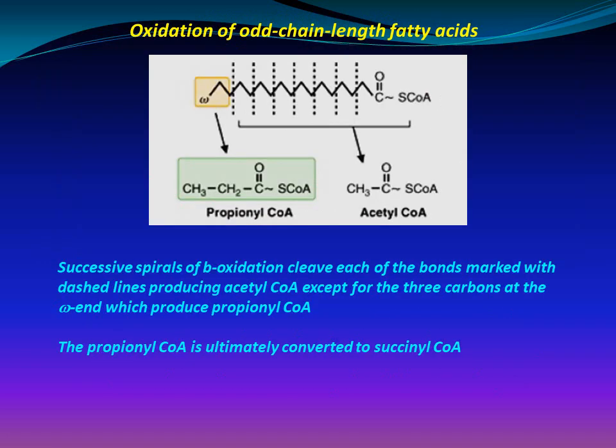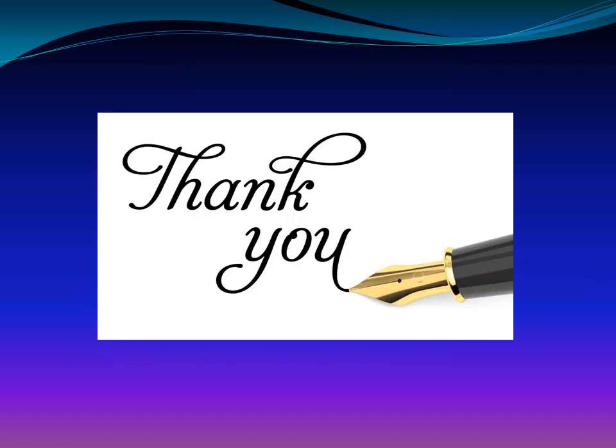Oxidation of odd-chain-length fatty acids: successive spirals of beta-oxidation cleave each of the bonds, producing acetyl-CoA, except for the three carbons at the omega end, which produce propionyl-CoA. The propionyl-CoA is ultimately converted to succinyl-CoA.